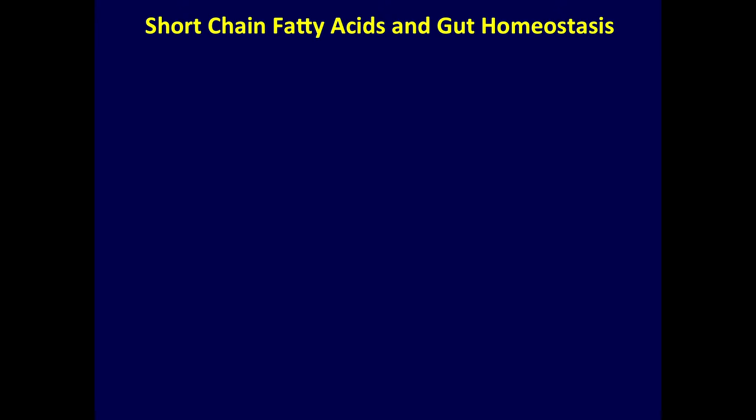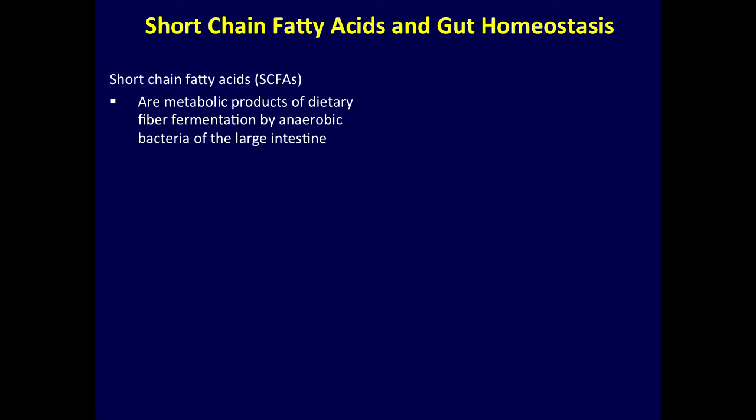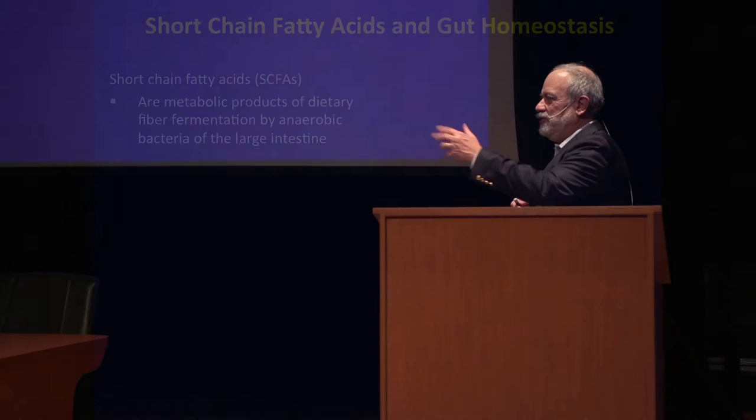One of the other important aspects is the loss of the short-chain fatty acid producers. Short-chain fatty acids are very important in gut homeostasis. They're made predominantly in the large intestine — they're metabolic products of dietary fiber fermentation by anaerobic bacteria. So these are being made depending on what you eat. These short-chain fatty acids are also cellular nutrients. I don't know if Esper is willing to collect stools on all of his colleagues today to check everyone's short-chain fatty acid content.